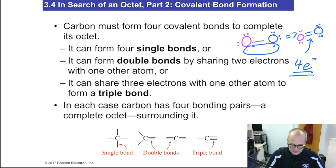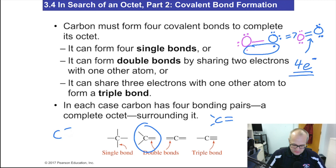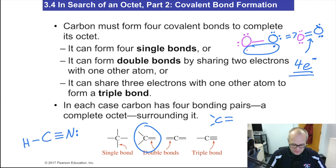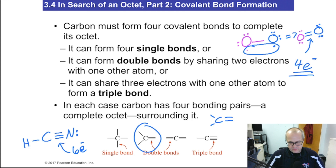Carbon can do this as well — carbon likes to make double bonds, and carbon likes to make triple bonds. Here's an example where carbon triple bonds to nitrogen: that's hydrogen cyanide. If you were to cover up the carbon, you would see that the nitrogen has a lone pair for two, four, six, eight. Triple bond counts for six electrons.